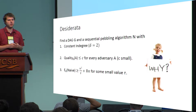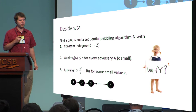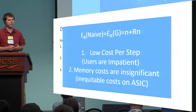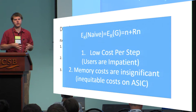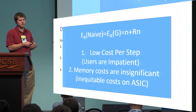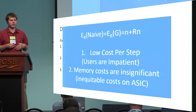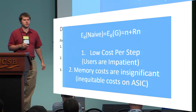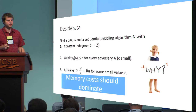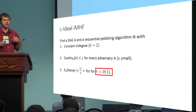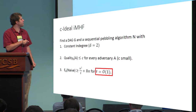We also want to guarantee that the cost of the naive algorithm is fairly large — roughly n²/τ for a small value τ. This might seem confusing: why do we want the naive algorithm to be expensive? Well, it rules out graphs that can be pebbled with very low space. Such a graph is bad because you have a low cost per step — users are impatient, so the maximum cost you can incur in a particular time frame is fairly low. And memory costs are an insignificant portion of the total cost, meaning that when you implement this on an ASIC, for example, you might expect a dramatic cost reduction. This criteria is really saying that memory costs — the n²/τ term — should dominate.